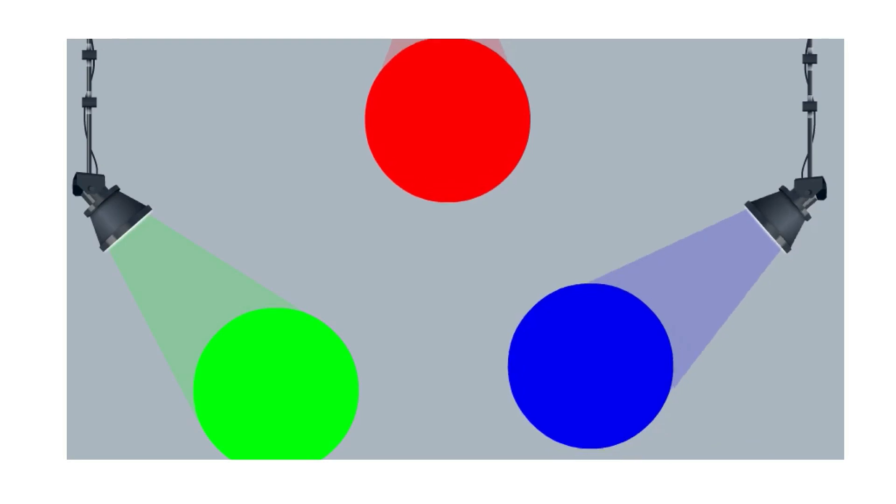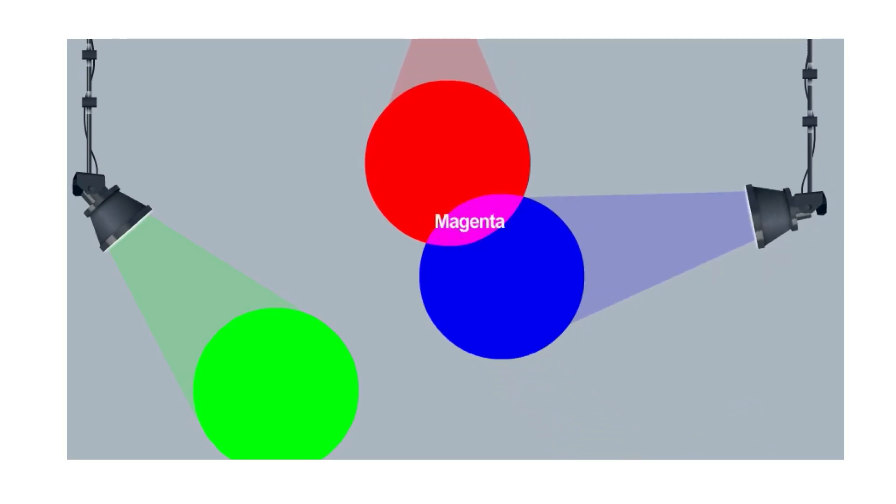Finally, when blue and red light are mixed together, magenta light is produced. Dan yang akhir sekali adalah warna magenta yang terhasil daripada pencampuran cahaya merah dan cahaya biru.